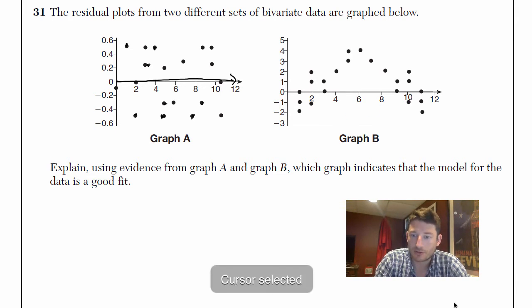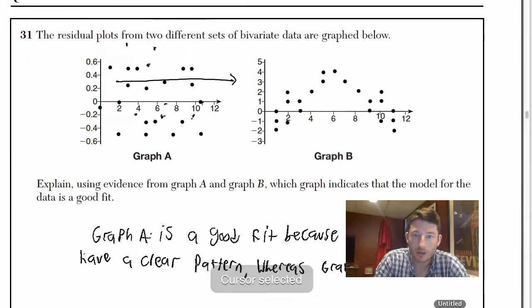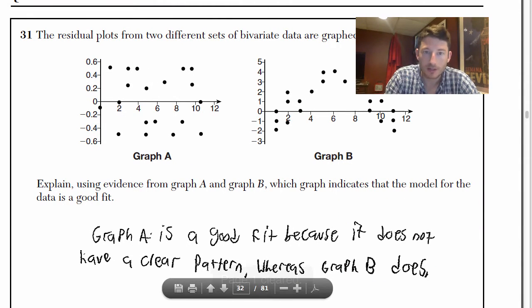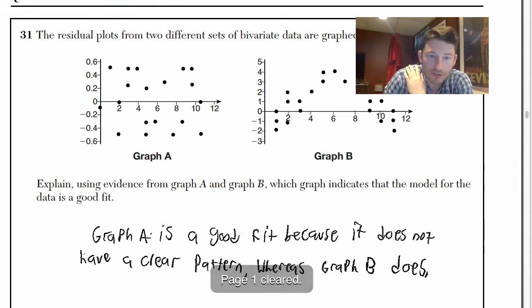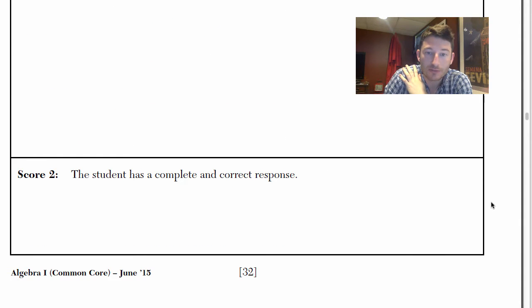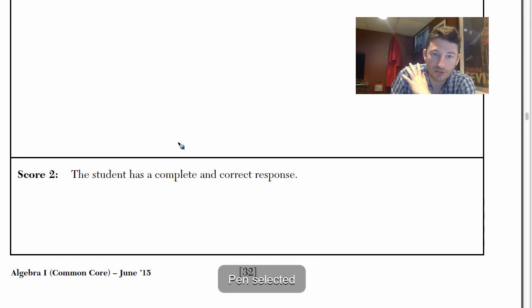Let's take a look at some of the answers that got the most points on the Regents. Let me just erase that. So this person said Graph A is a good fit because it does not have a clear pattern whereas Graph B does.